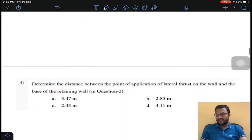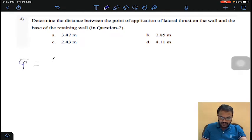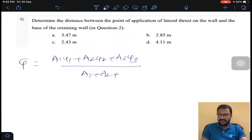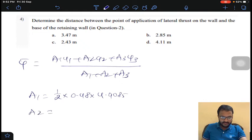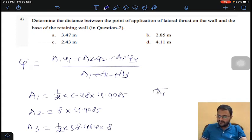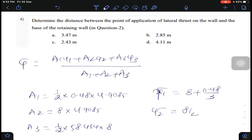In the next question, he's asked where it's acting. Y bar equals A1Y1 plus A2Y2 plus A3Y3 divided by A1 plus A2 plus A3. I divided the entire diagram into 3 components. A1 is half into 0.48 into 4.9085, A2 is 8 into 4.9085, A3 is half into 58.464 into 8. Y1 bar equals 8 plus 0.48 divided by 3, Y2 bar equals 8 by 2, Y3 bar equals 8 by 3. If you calculate, you get 2.88 approximately. Answer B for question number 4.